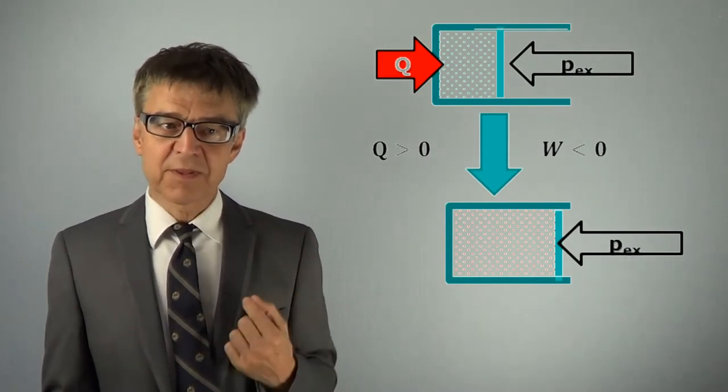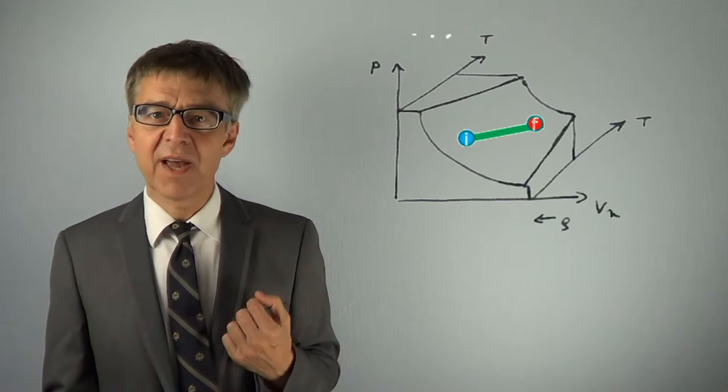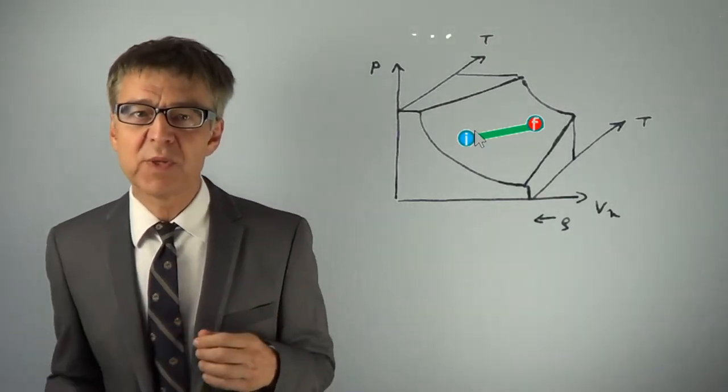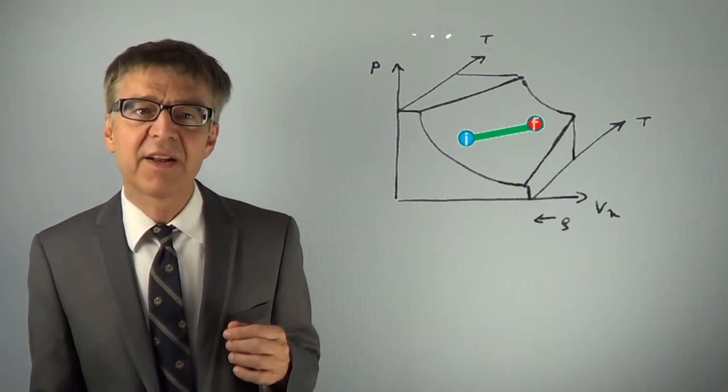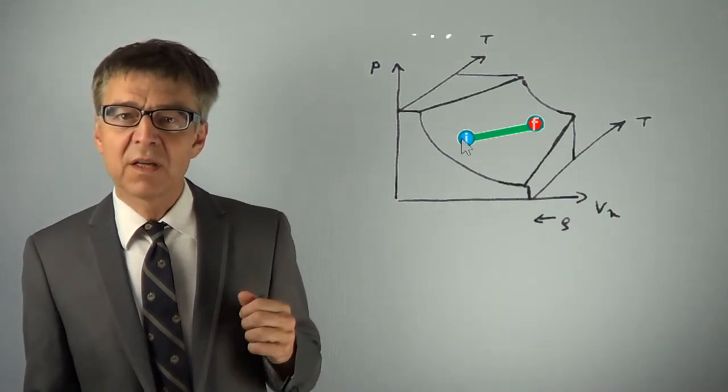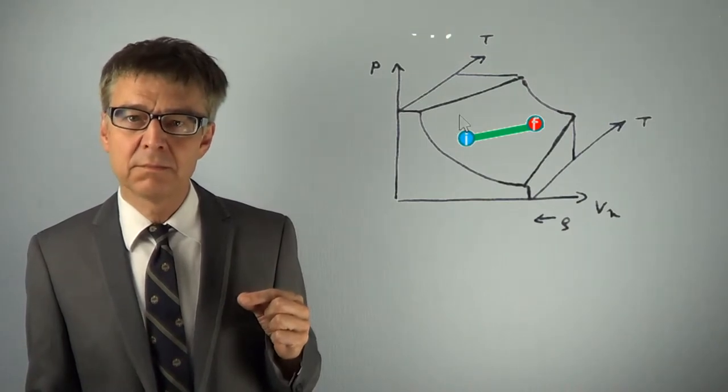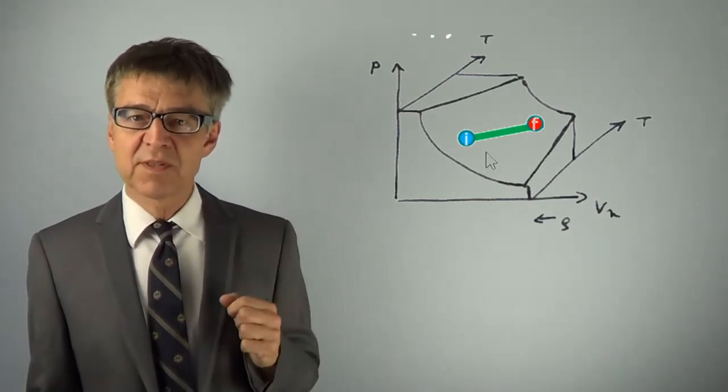We can plot this process in the PVT diagram. It corresponds to an isobar between the states I and F. By the way, each point in our phase diagram corresponds to a state.